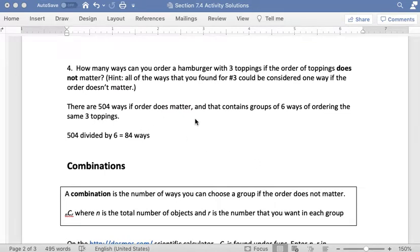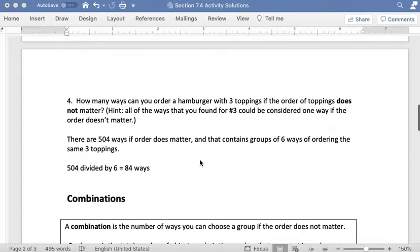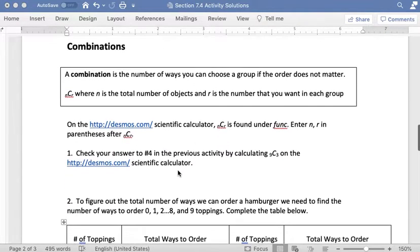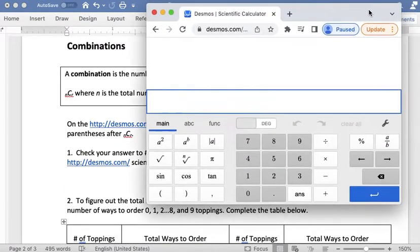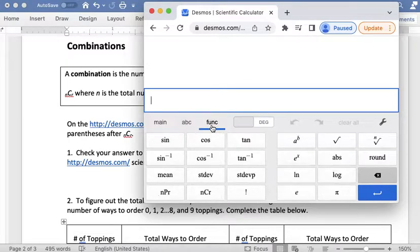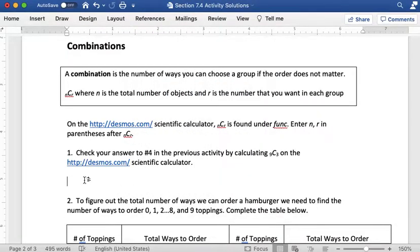We found that the number of ways to make a hamburger with 3 toppings if there are 9 total toppings to choose from is 84 ways. So if I go to my Desmos.com scientific calculator, I go to the function menu, click on that, and then I see the nCr button down in the bottom row. I hit that and then in the parentheses I type 9 comma 3 and I see that I get the answer of 84. So that checks out. This is nCr parentheses 9 comma 3 equals 84.